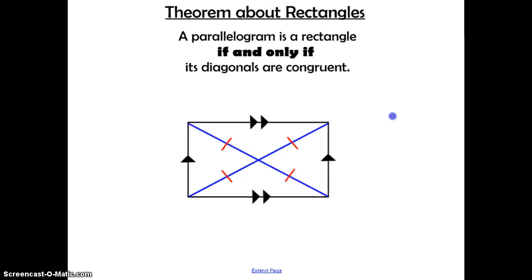Here's a theorem about rectangles: a parallelogram is a rectangle if and only if its diagonals are congruent. For parallelograms, we know that diagonals bisect each other — they cut each other in half. But for rectangles, the diagonals are also congruent to each other, so when they get bisected, each of the four segments ends up being congruent.